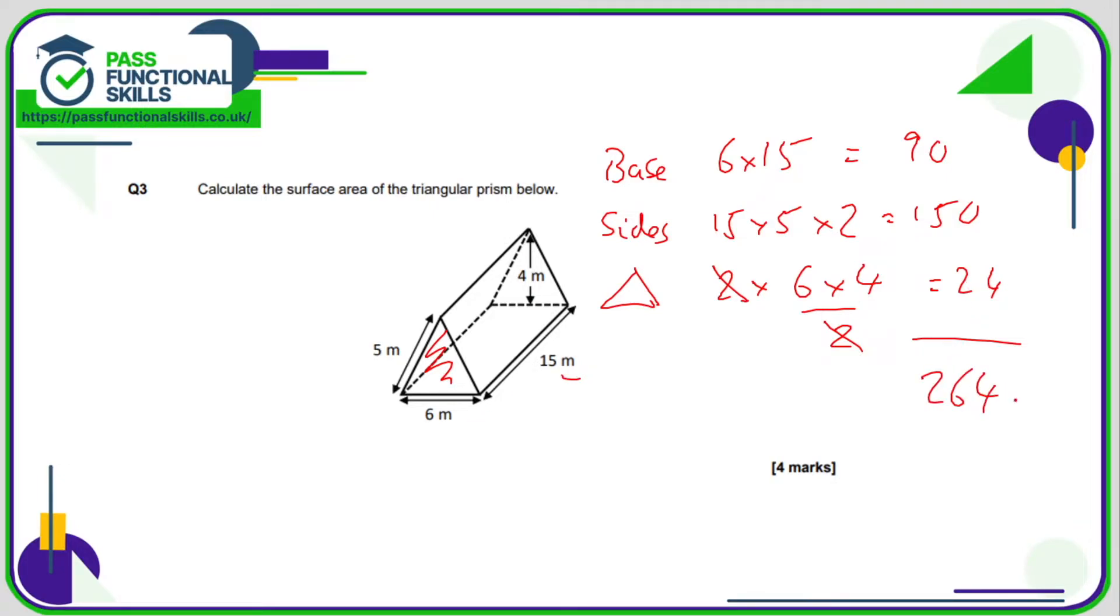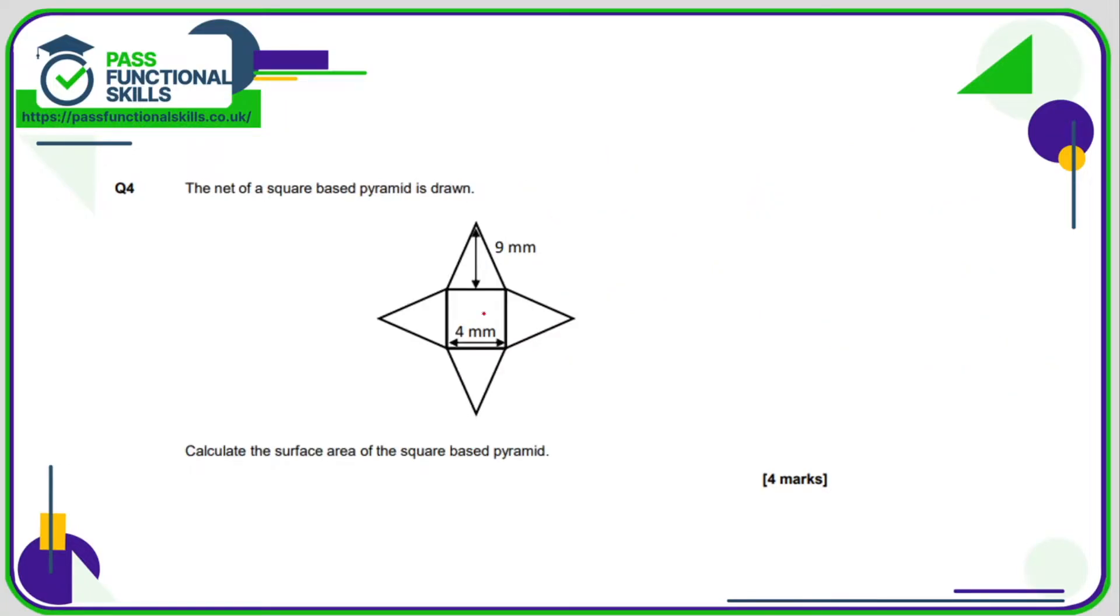And since this is meters this is therefore going to be meters squared. Question number four: we have a square here, it's a square based pyramid. So here we've got a 4 times by 4 which is 16, and here we've got a triangle which is 4 by 9.